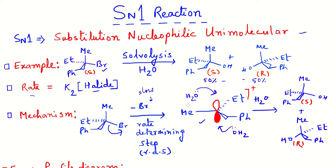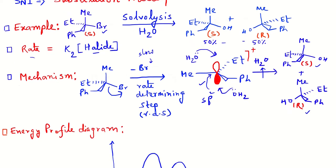After the carbocation forms, since the carbocation is a planar, sp2-hybridized entity with a vacant p orbital, the entering nucleophile — in this case water — can attack from either the top face or the bottom face. Attack from the top face produces the S enantiomer, and attack from the bottom face produces the R enantiomer.